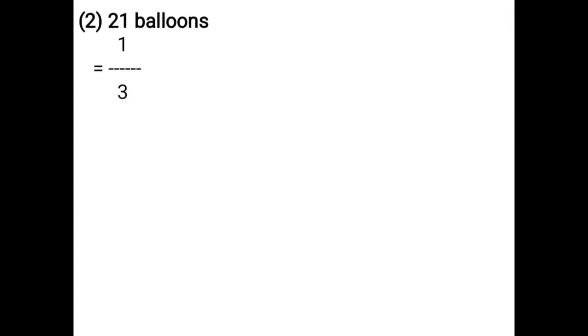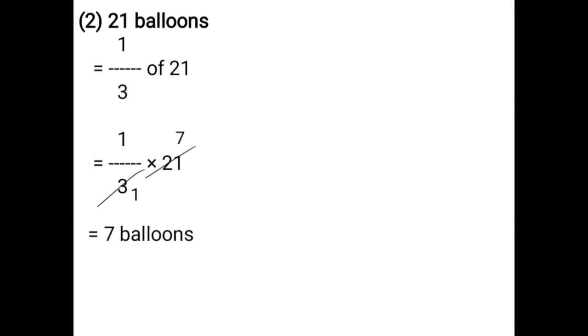21 balloons. That is equal to 1 upon 3 of 21, that is equal to 1 upon 3 into 21. Using the cancellation method: 3 ones are 3, 3 sevens are 21, 1 seven is 7. That is equal to 7 balloons.